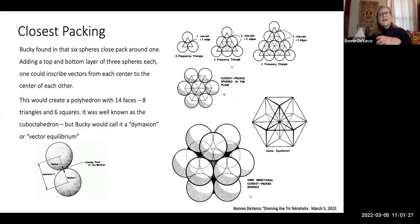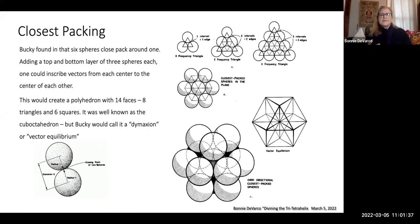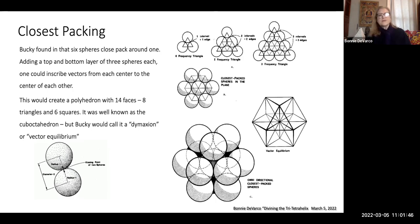In close packing, every one of us knows about the six spheres close packing around one, adding the top layer of three spheres each — you will get this 12-around-one vector equilibrium. If you take the kissing point of spheres — we all know this already — but I wanted to just put this in as a refresher.